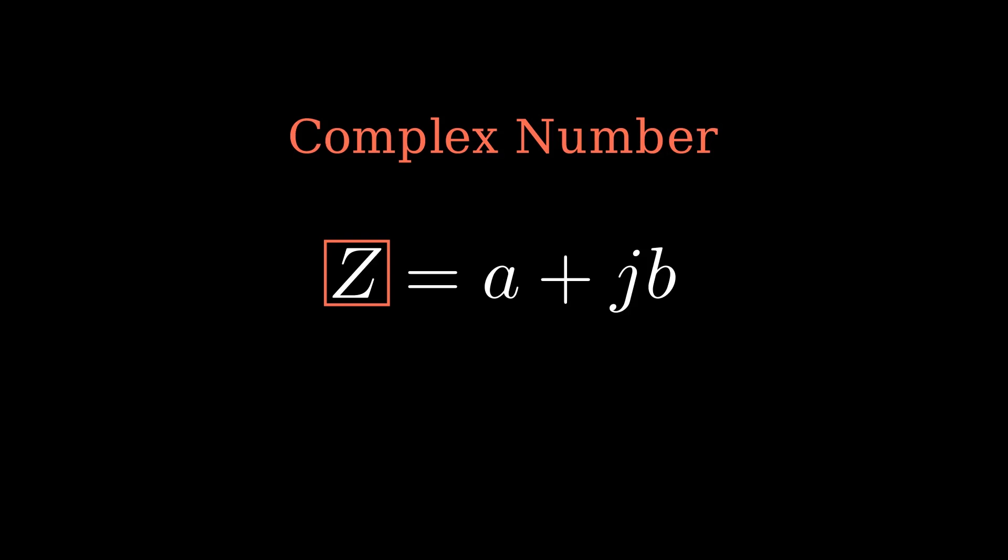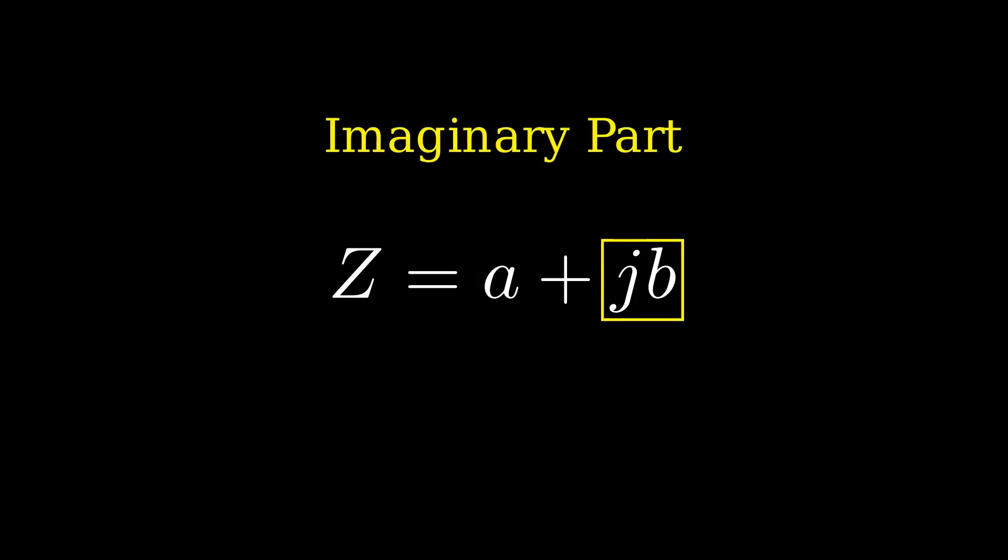The complex number z is set equal to the expression on the right and consists of two parts. a is the real part of our complex number, and jb represents the imaginary component of our complex number.